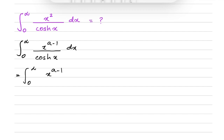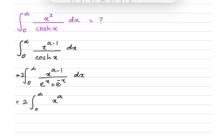We know that hyperbolic cosine of x equals (e^x + e^(-x))/2, so we can write 2 outside the integral. Then, multiplying both numerator and denominator by e^(-x), we get x^(a-1) times e^(-x) over (1 + e^(-2x)).